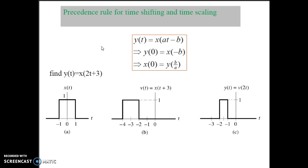Another important operation is the precedence rule for time shifting and time scaling. Consider example y(t) equal to x(at minus p). First, you find y(0) equal to x(minus p), and x(0) equal to y(p/a). For a practical example, draw signal y(t) equal to x(2t plus 3). First, perform the time shifting operation — that is x(t plus 3) — and then perform the time scaling operation, replacing t with 2t. So the precedence rule states: first perform time shifting, then time scaling.